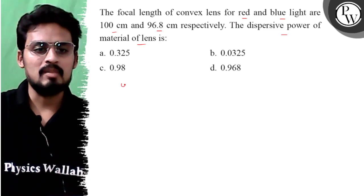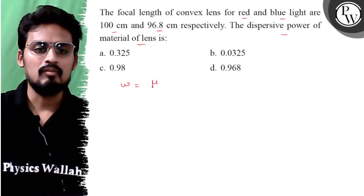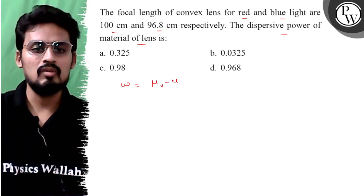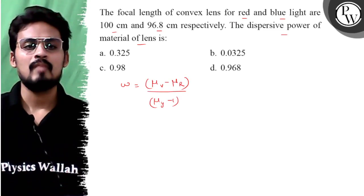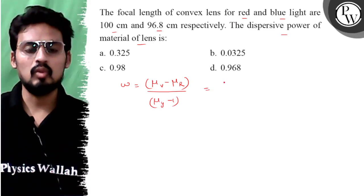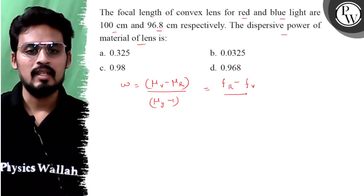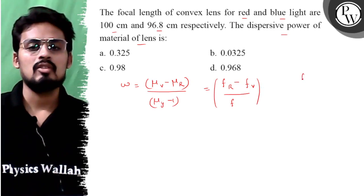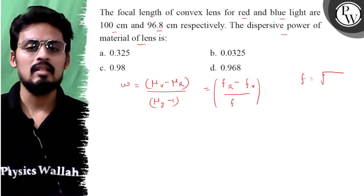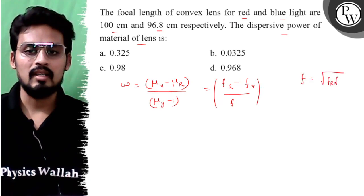Now we know that when we talk about dispersive power of a material of the lens, then we write mu of violet minus mu of red upon mu of yellow minus 1. But since we have focal length given here, we can tweak it and write it as: f_r minus f_v upon f. Correct. Now here f is basically the mean focal length of the lens. So we write it as f_r into f_v.